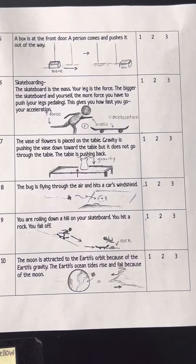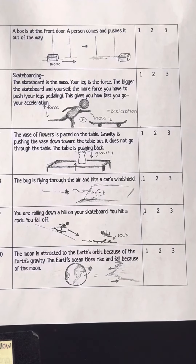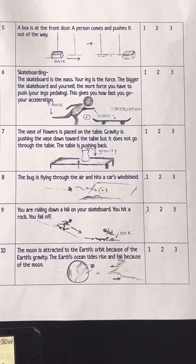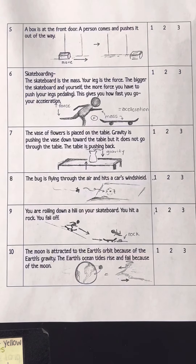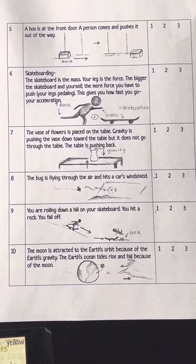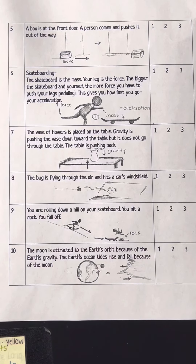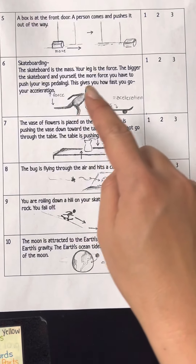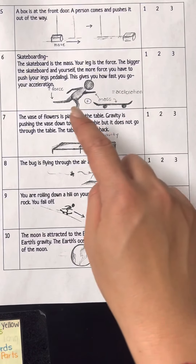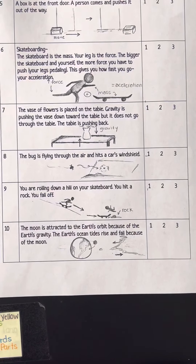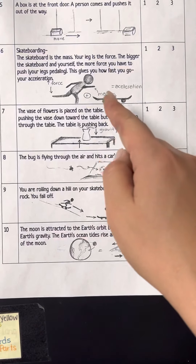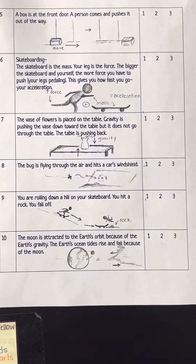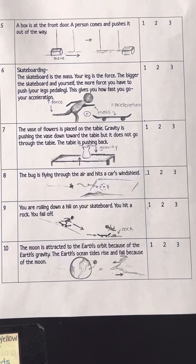Number 6: Skateboarding. The skateboard is the mass. Your leg is the force. The bigger the skateboard and yourself, the more force you have to push. This gives you how fast you go — your acceleration. You are the mass, and you have to apply the force for the skateboard to go. Your mass and how fast you go depends on the force of you pushing the skateboard.